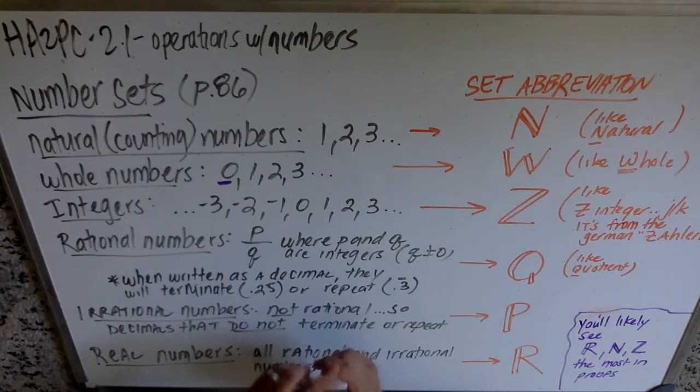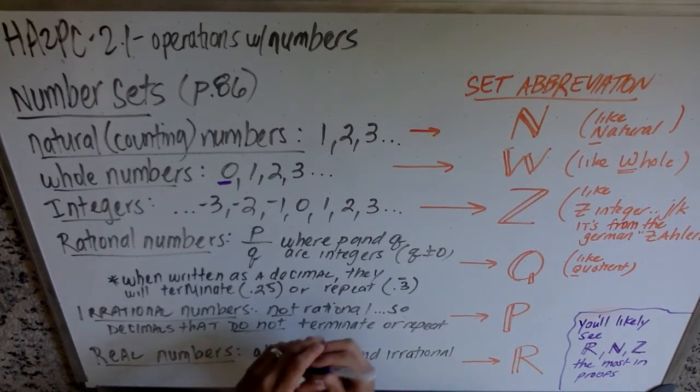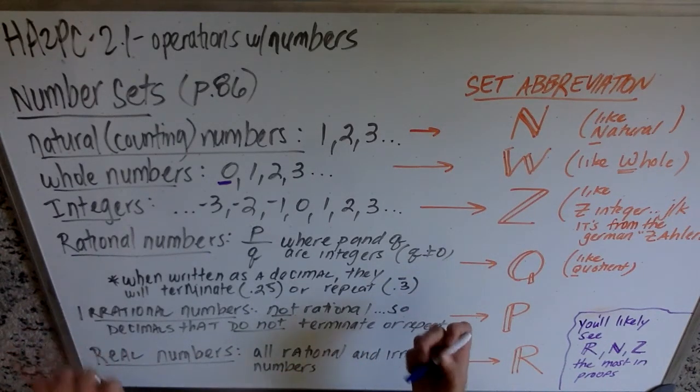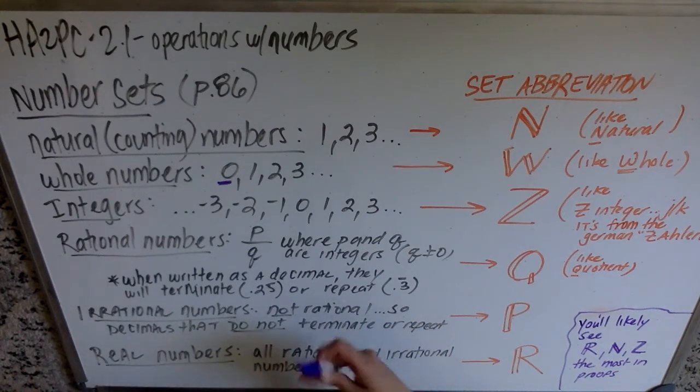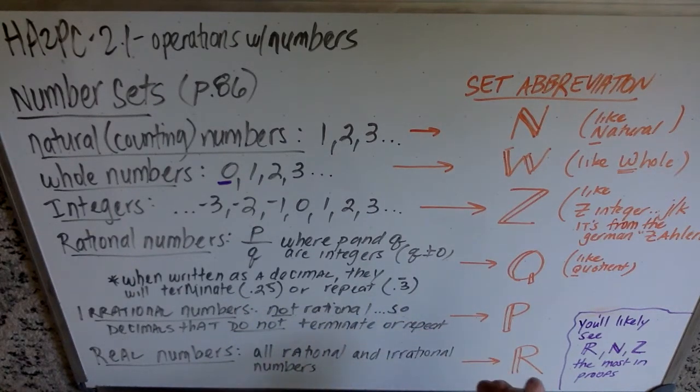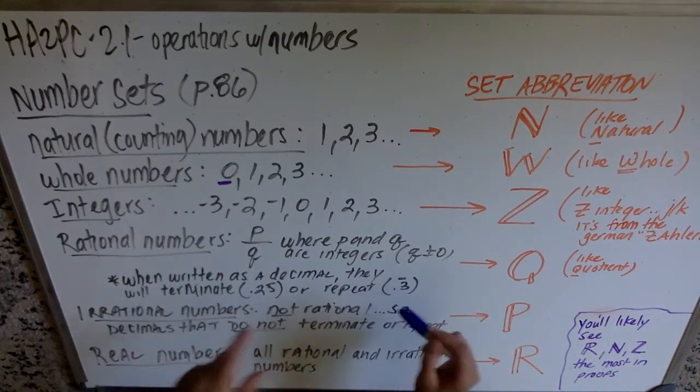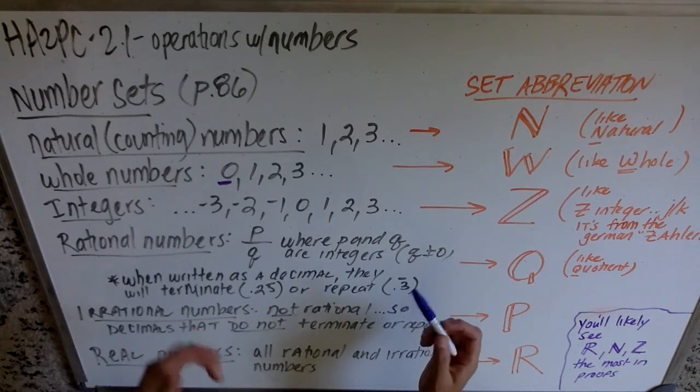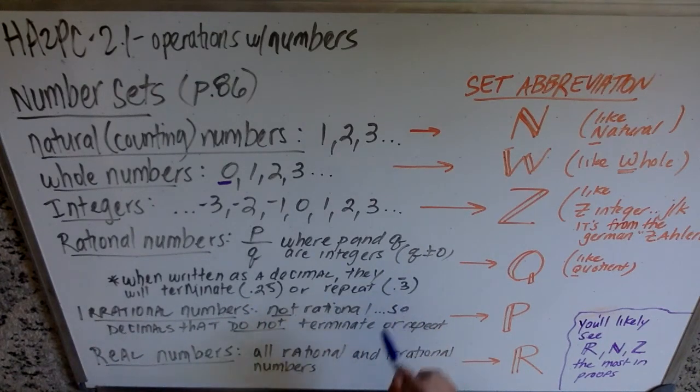Rational numbers are numbers that can be written as P over Q, where P and Q are both integers. What's worth noting here is that if you have a rational number that is written as a decimal, it's either going to terminate, meaning end, like 0.25, which is the same as 1/4. Or it'll repeat, like 0.3 repeating, which is the same as 1/3. Both of those are rational numbers.